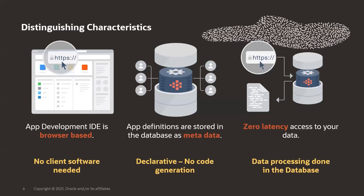The second distinguishing characteristic is that app definitions are stored in the database as metadata. We are not a code generator — we are a declarative platform. The moment you want to change something, all you need to do is go to that page, region, or item, do the change, save it, and it's there. There is no complicated compilation. You don't have to move files, take them to an application server and deploy them.